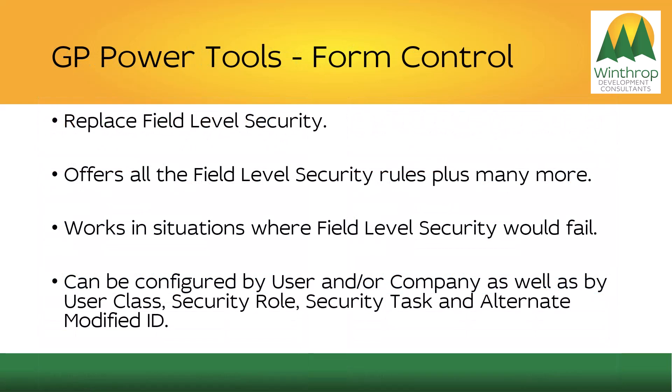GP Power Tools also has the ability to completely replace field level security. It offers all of the rules that field level security has, plus many more. It also works in situations where field level security would fail — such as where a disabled or hidden field reappears because there is code on the window that brings it back. It can be configured by user and/or company, as well as by user class, security role, security task, and alternate modified ID, making it much easier to maintain than field level security.